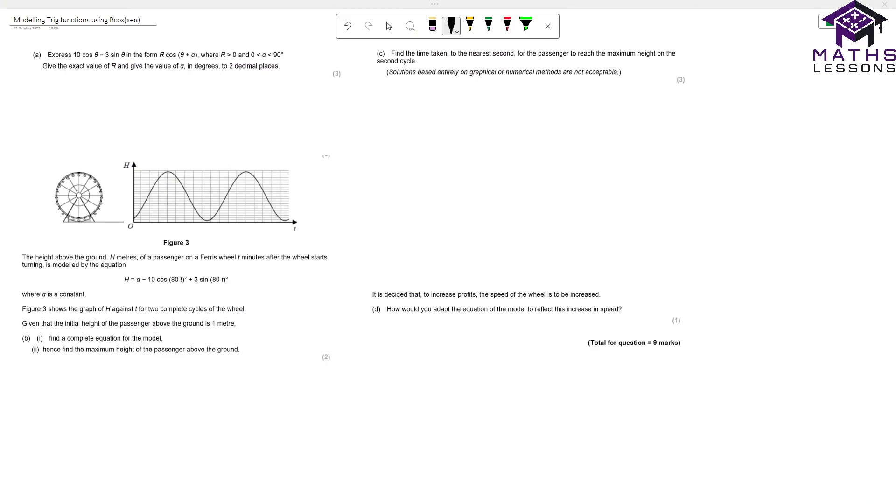Here we have a question where we're going to be modeling a trigonometric function using r·cos(x + α). We're going to express 10cos(θ) - 3sin(θ) in the form r·cos(θ + α), where r is greater than 0 and α is between 0 and 90 degrees. Give an exact value for r and the value for α to two decimal places.